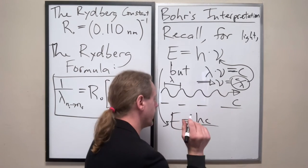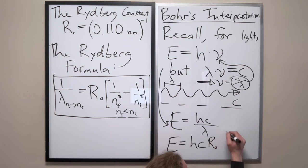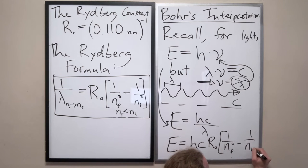So, this ends up looking like E equals H C R naught 1 over NF squared minus 1 over Ni squared.